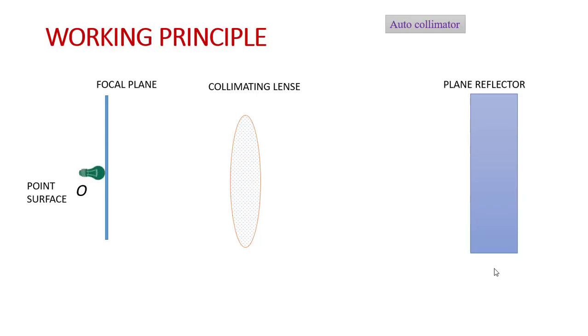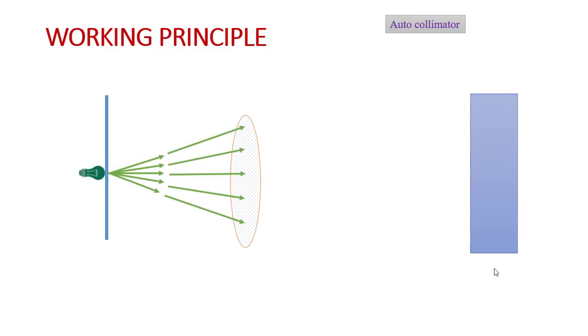At the point surface, the light rays will be projected along the focal plane. This light rays projected on the collimating lens provides the parallel pencil lines.